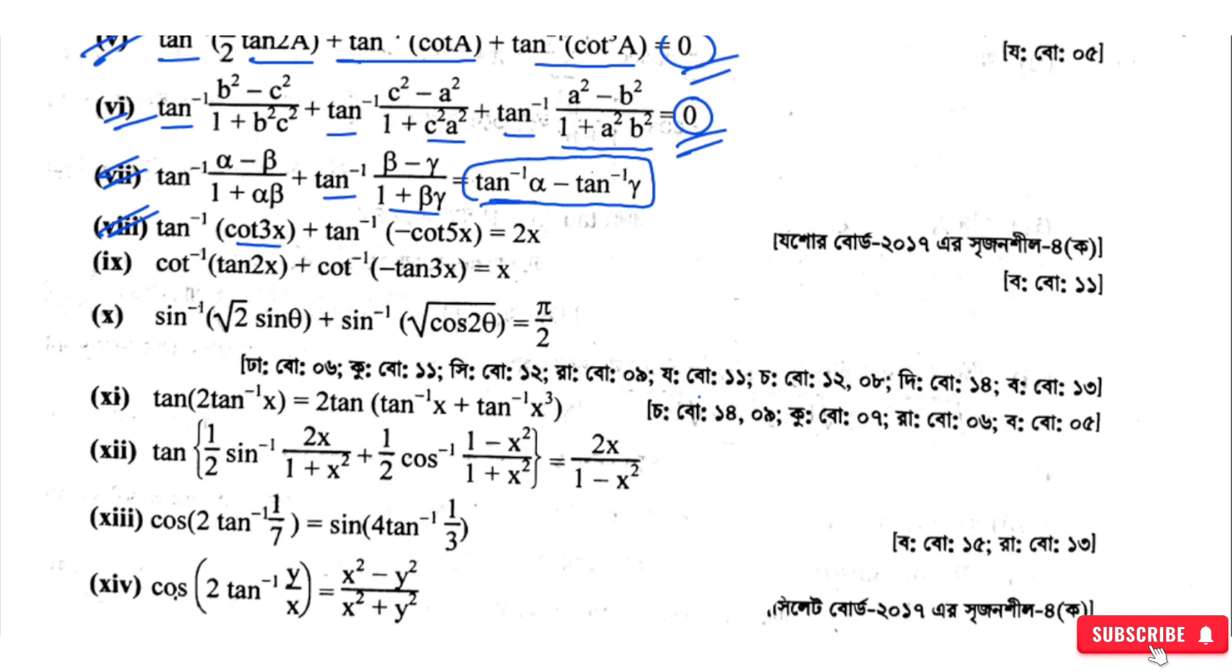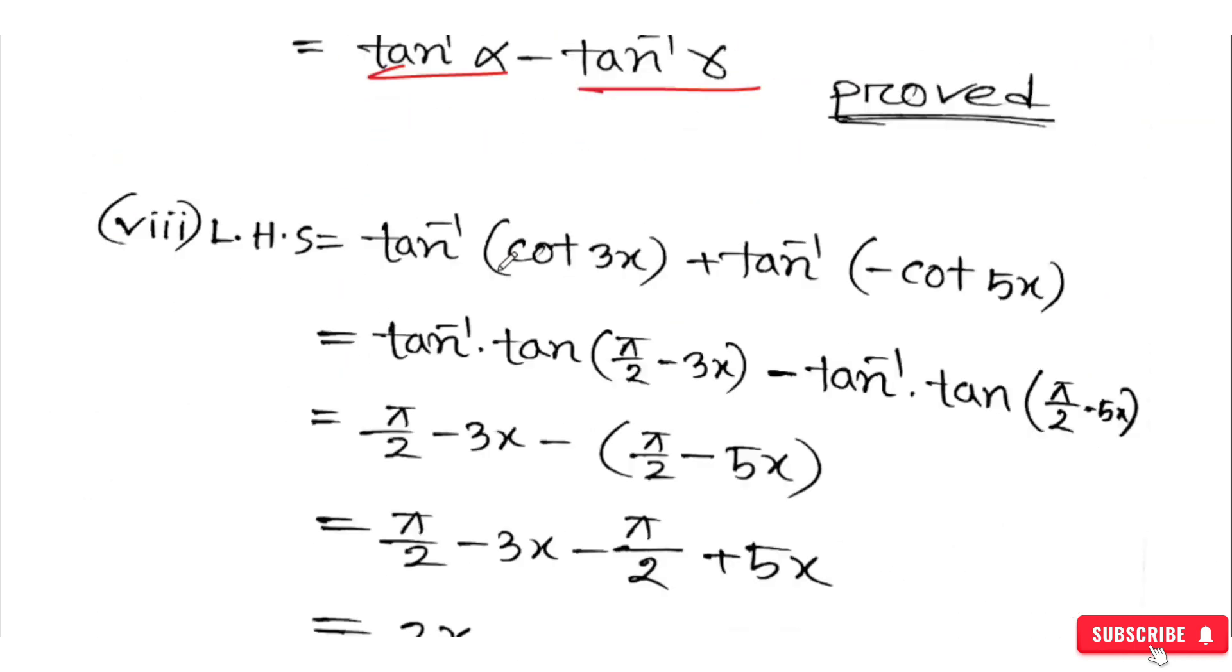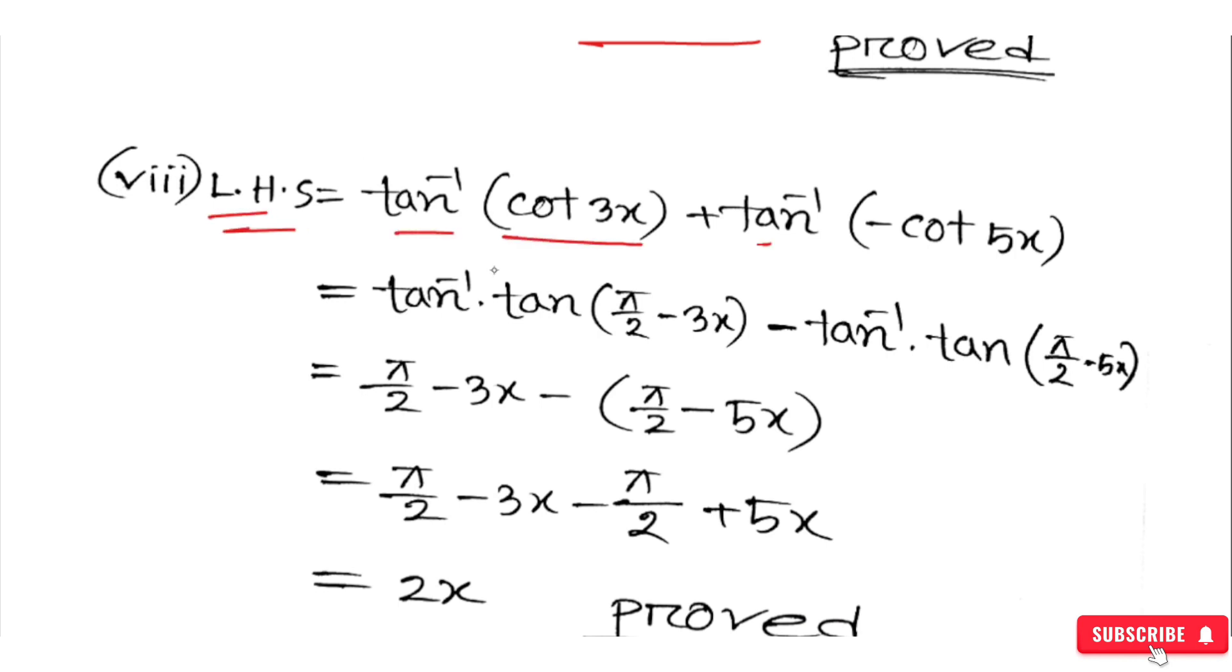Next problem: Left-hand side equals tan⁻¹(cot 2x) plus tan⁻¹(minus cot 5x), which equals tan⁻¹ of (π/2 minus 2x) minus tan⁻¹ of (π/2 minus 5x). This simplifies to π/2 minus 2x minus π/2 plus 5x.